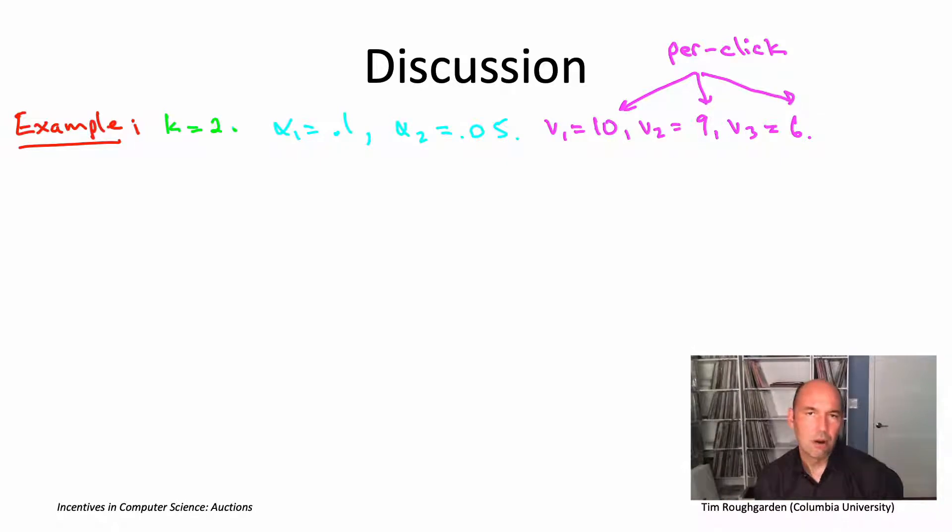It's going to be the first bidder that has an incentive to underbid. Let's just go ahead and assume that bidders number two and number three bid truthfully. Remember, truthful bidding is supposed to be optimal no matter what other players do. So in particular, it should be optimal if the other players bid truthfully. The question now is, should bidder number one bid truthfully also?